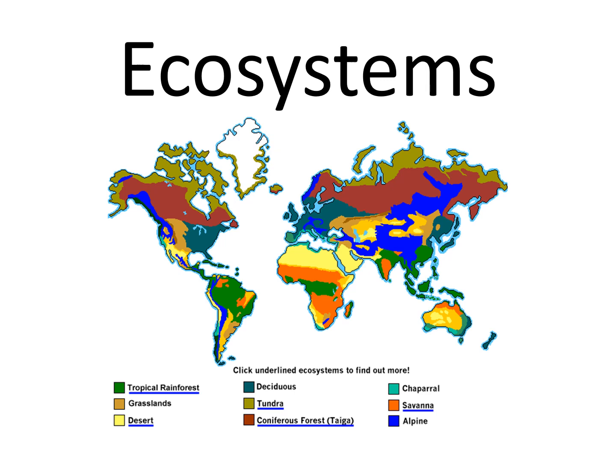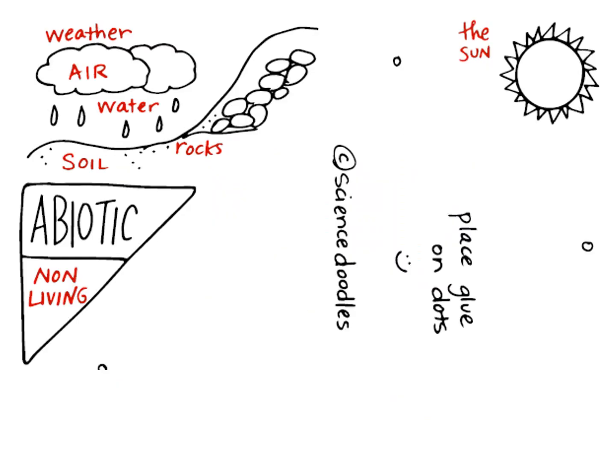Here we have a picture of a bunch of different ecosystems that exist all over the world. First things first, we're going to have a lot of vocabulary with ecosystems. The first words I want to talk about are biotic and abiotic.